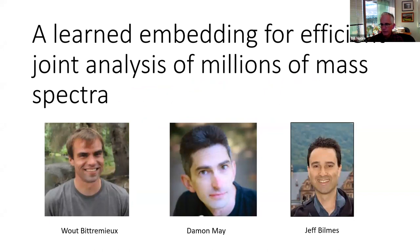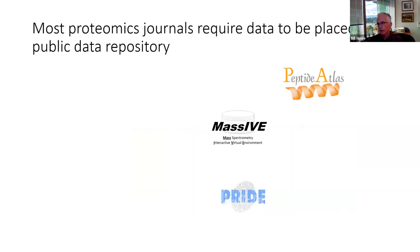The first problem was started by Damon May during his PhD in my lab, finished by Wout Vitrimia — now a professor in Belgium — in collaboration with Jeff Bilmes in electrical engineering. The motivation was to make better use of public data repositories. Proteomics was late to the party on open data access, but it's gotten much better: most big journals now require that new mass spectrometry data be deposited somewhere like MassIVE, PRIDE, or PeptideAtlas.